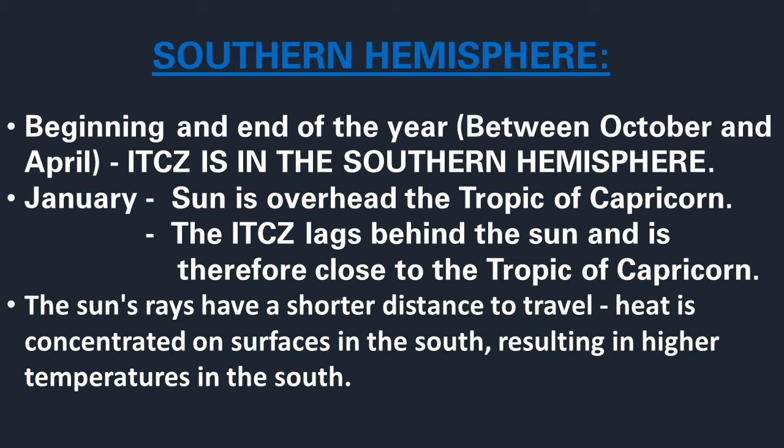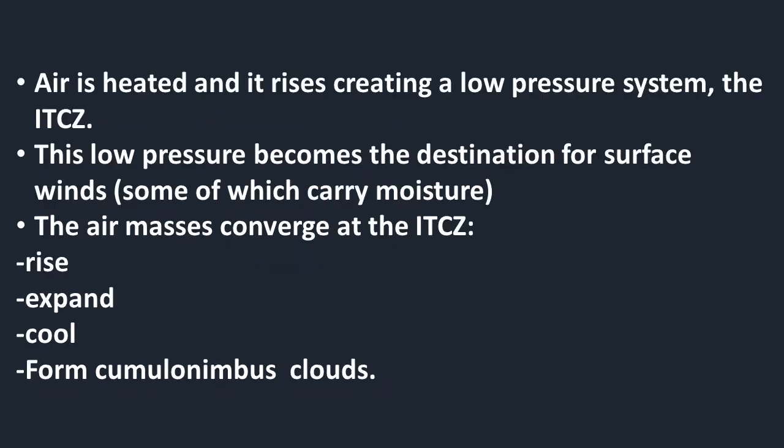This is because this is the time of year that the sun tends to hang around in the southern hemisphere. Because the ITCZ lags behind the sun, wherever the sun is the ITCZ is in very close proximity to it. With the sun in the southern hemisphere at the beginning and end of the year, the angle of incidence of the sun is quite large, which explains why heat is concentrated on surfaces in the southern hemisphere compared to those in the northern hemisphere.